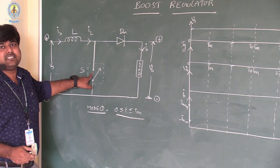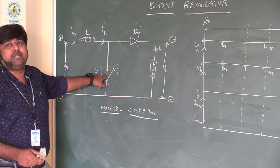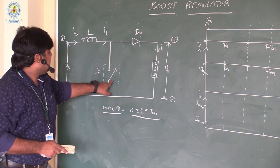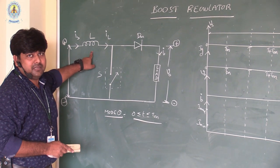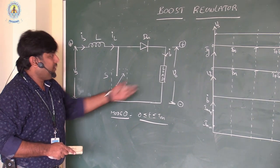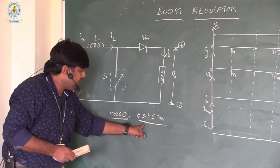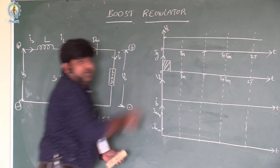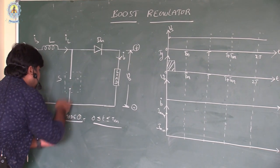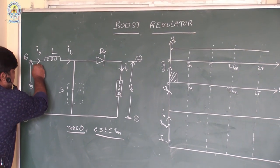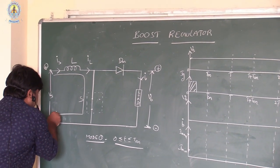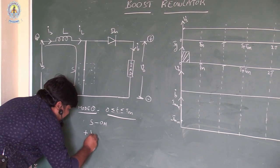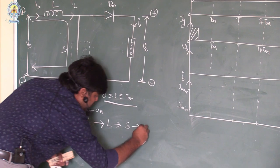In Mode 1, when switch S is on, how the switch turns on and off depends purely on the inductor current. If the inductor current is maximum, the switch turns off; if minimum, the switch turns on. During zero less than T less than T-on, when the switch is on we apply the gate pulse, the switch closes, and the current direction is from Vs through the inductor to the switch and back to minus Vs.